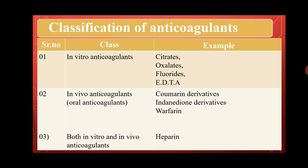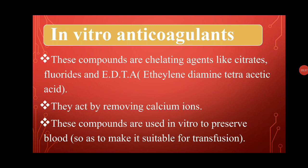The first class, in vitro anticoagulants, includes chelating agents like citrate, fluoride, and EDTA — ethylene diamine tetra acetic acid. They act by removing calcium ions. These compounds are used in vitro to preserve blood so as to make it suitable for transfusion.